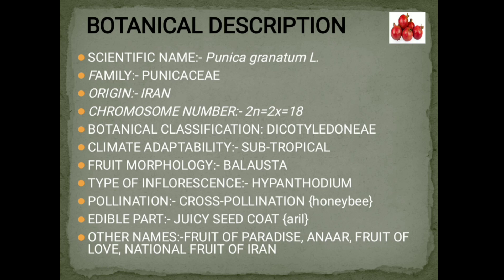In this inflorescence, the axis becomes fleshy and pear-shaped with a hollow cavity inside. The female flowers are present at the base and towards the apical opening lie the male flowers. Pollination is cross-pollination. Edible part is the juicy seed coat. Other names are Anar, Fruit of Paradise, Fruit of Love, and it is the National Fruit of Iran.